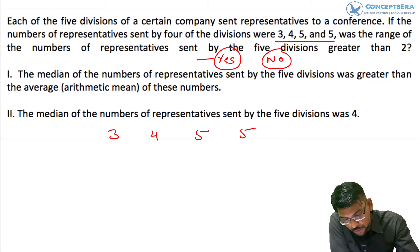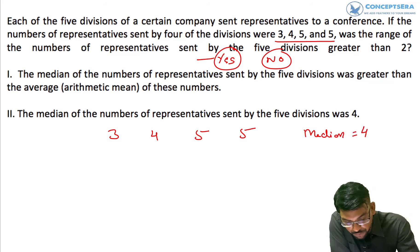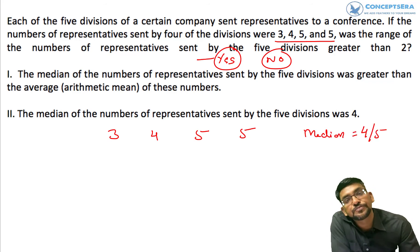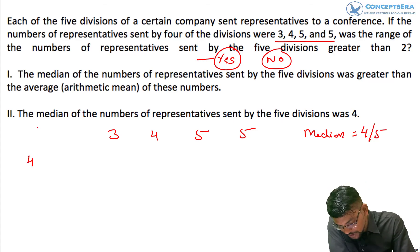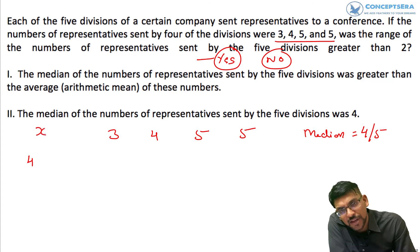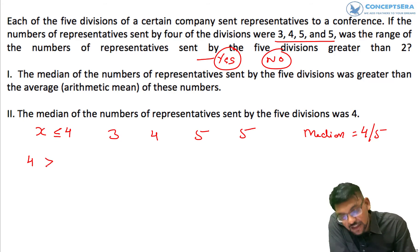So what we can figure out from here is that in any case, the median will be either 4 or 5. If the median is 4, the number of representatives sent by the unknown division has to be less than or equal to 4, meaning 4 (the median) is greater than the mean.